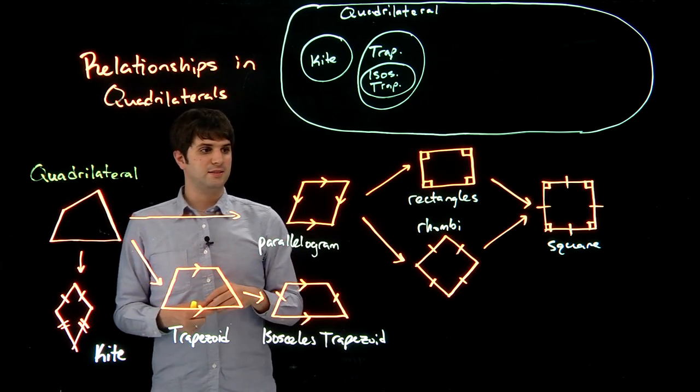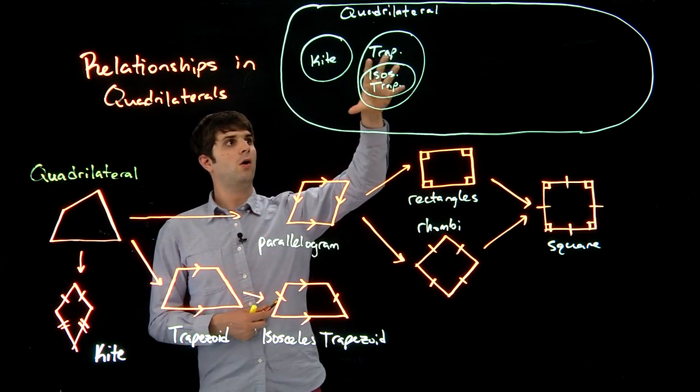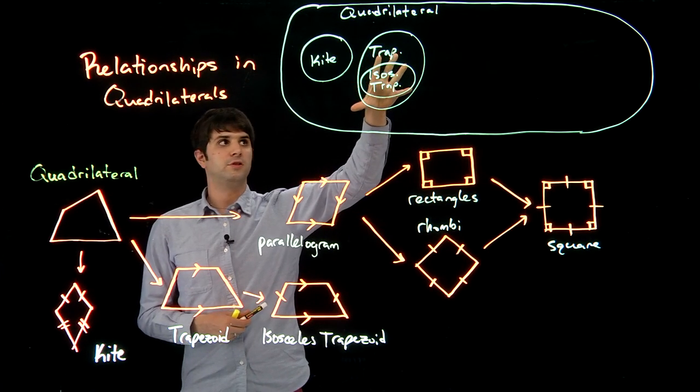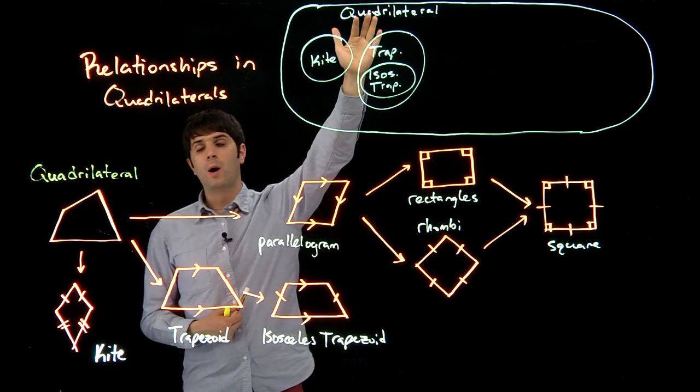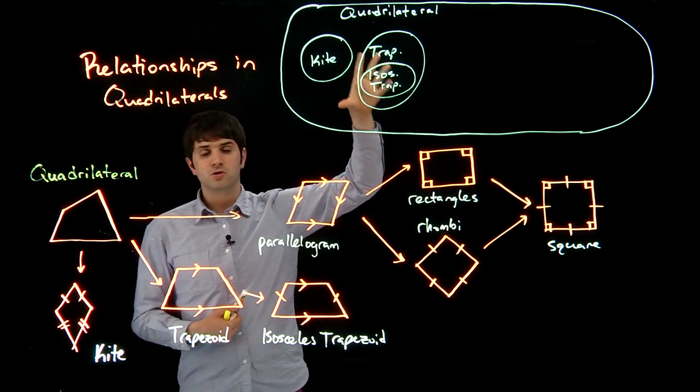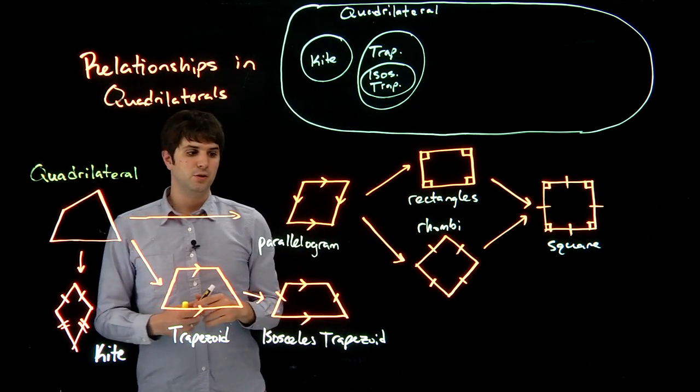Just to help you sort of organize this information in your head, all isosceles trapezoids are trapezoids, but not all trapezoids are isosceles trapezoids. Not all quadrilaterals are trapezoids, but all trapezoids are quadrilaterals, so you can think about it this way.